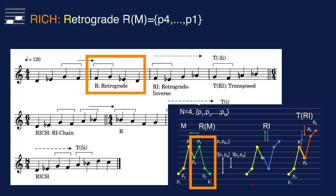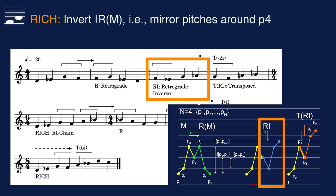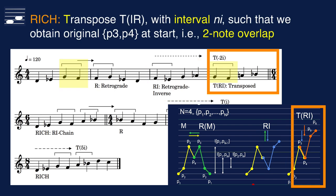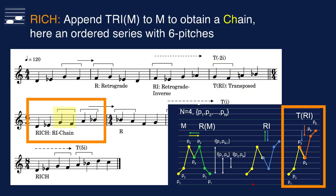The first step in the process is to write the retrograde R of M by putting the pitch series in reverse order. Next, we invert the retrograde, mirroring the interval classes around P4. The retrograde inverse then is transposed by a suitable interval, such that we obtain the two common notes here G and F. Finally, we append this transposed version to the original melody, while eliminating the overlap. We have obtained an RI chain consisting of 6 notes.